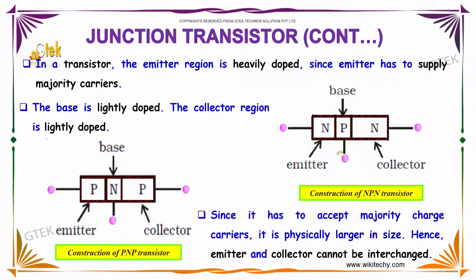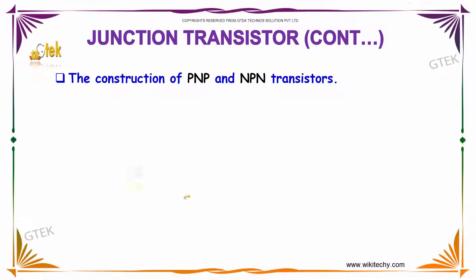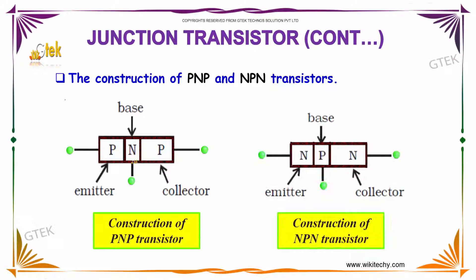The collector is lightly doped but heavily doped relative to its need to accept majority charge carriers, and it is physically large in size. Hence, the emitter and collector cannot be interchanged. You can see the collector is bigger in size. The construction of PNP and NPN transistors is shown here.